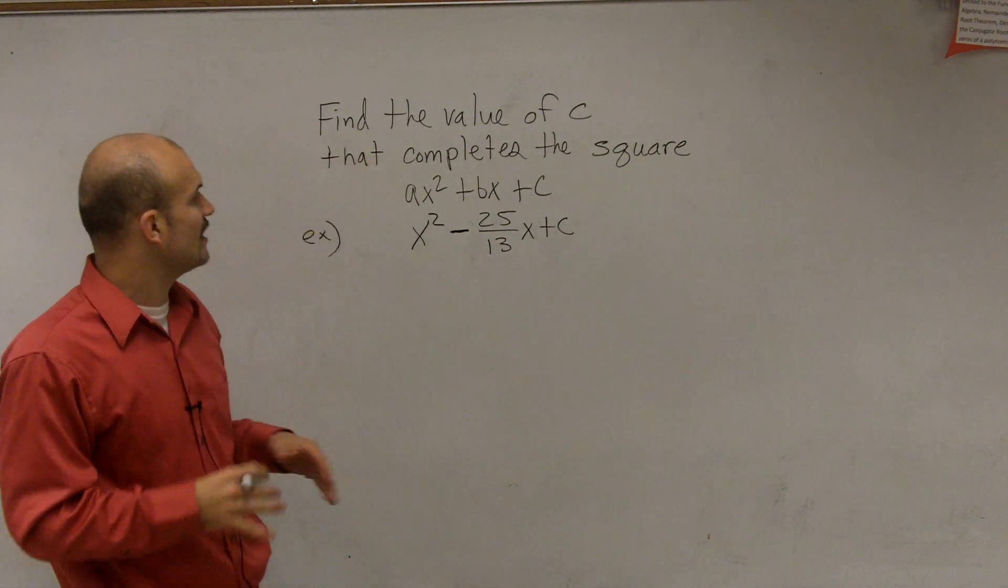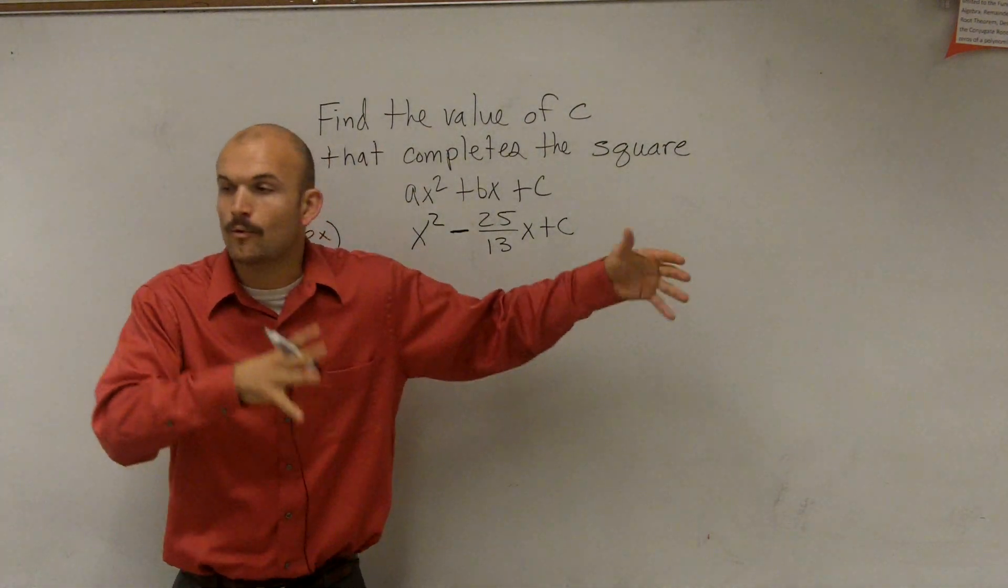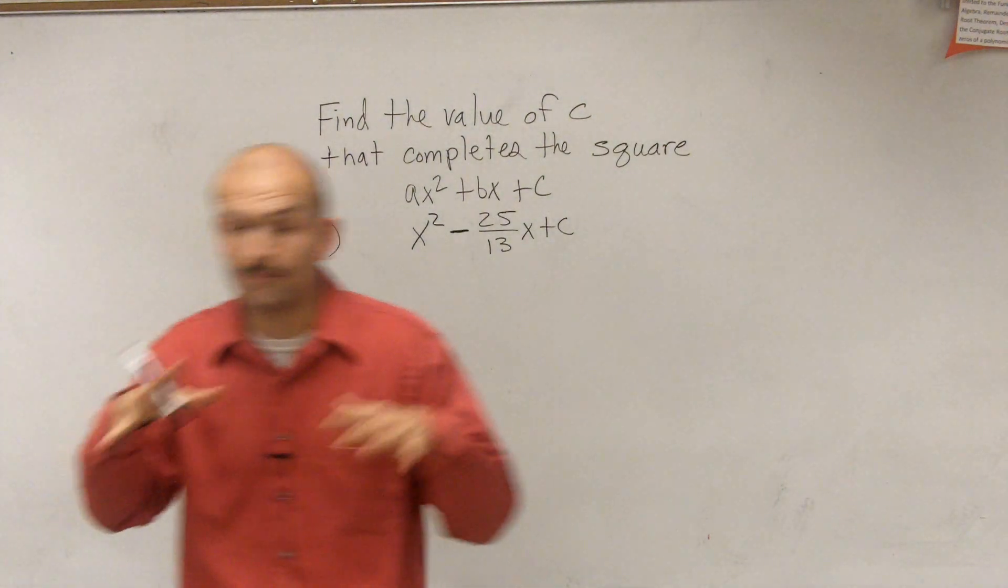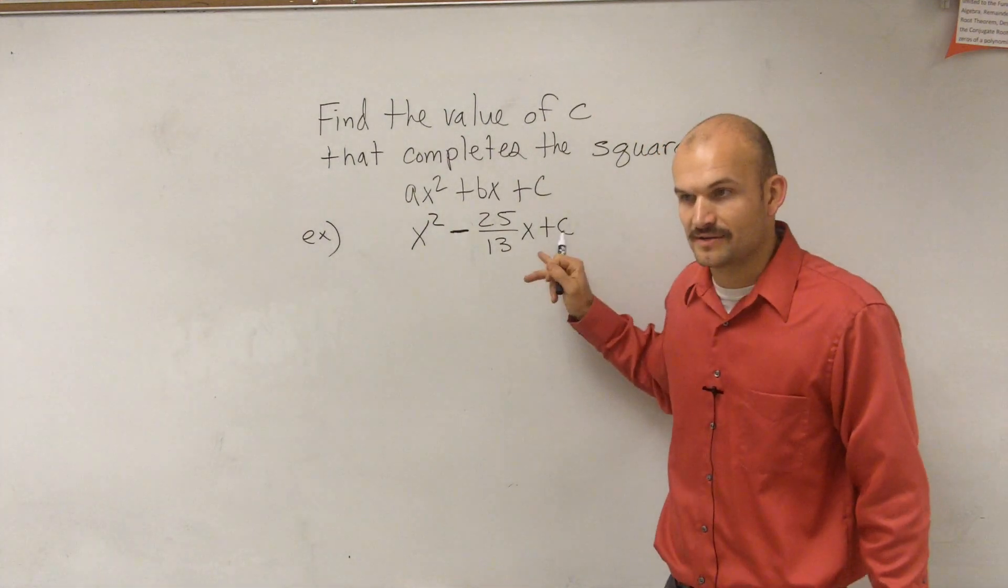So the main important thing is it says find the value of c that completes the square. Now I don't want to get too far in advance on why we're doing this. I'm going to show you, or I have other videos available on why we complete the square and when it comes up in a problem and why we need to find the value of c.